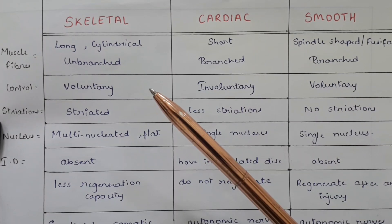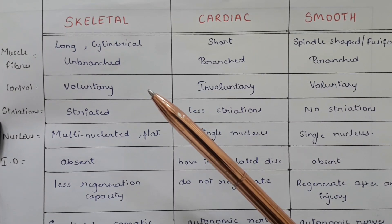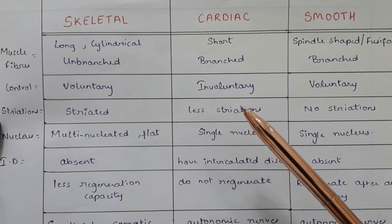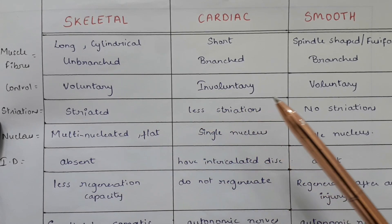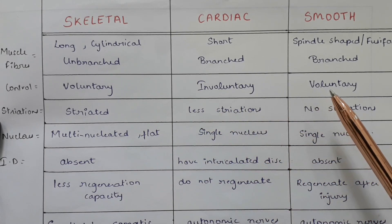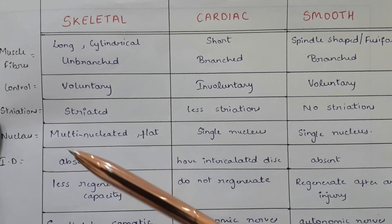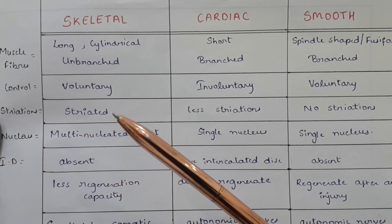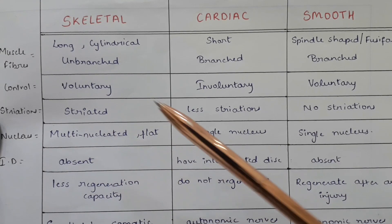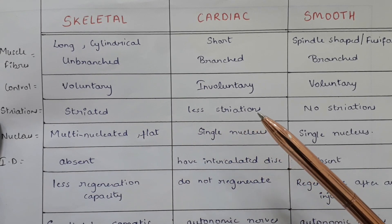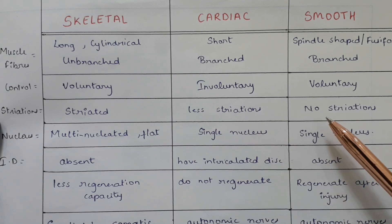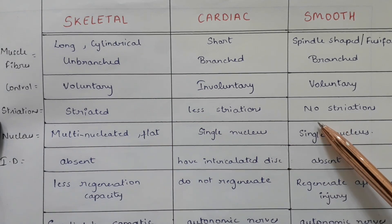In skeletal muscle the control is voluntary. In cardiac it is involuntary, and in smooth muscle it is voluntary. Skeletal muscles have striations. Cardiac muscles have less striations, and smooth muscles have no striations.